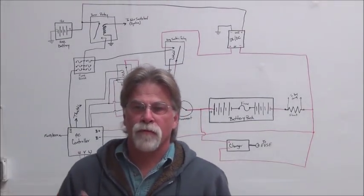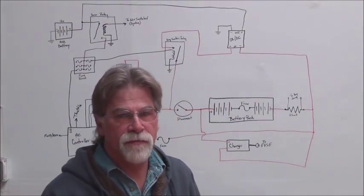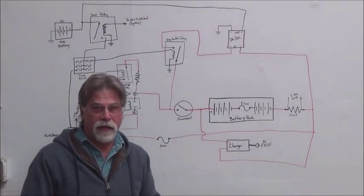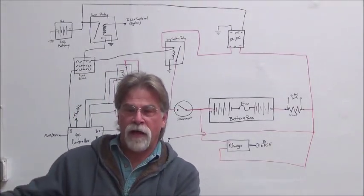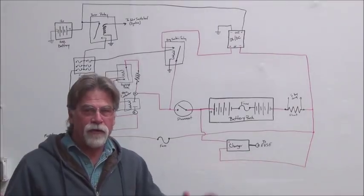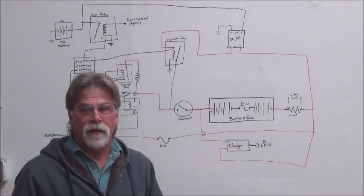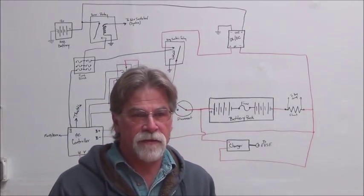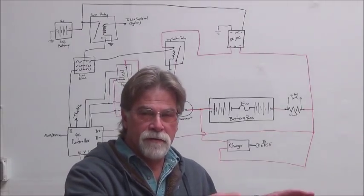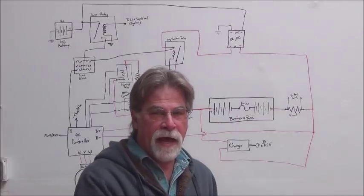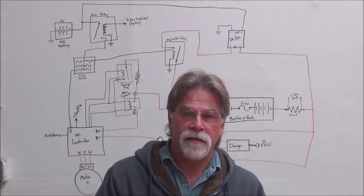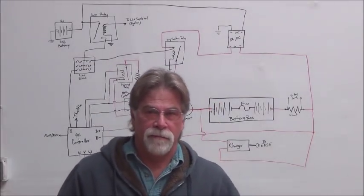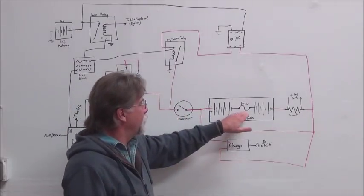So we'll talk about the traction system first. What we have is a battery pack. You can have different sections of the battery pack - you can have a front and rear, left and right, however you have it, or you can have it all together. In our Carmen Ghia, it's all together.